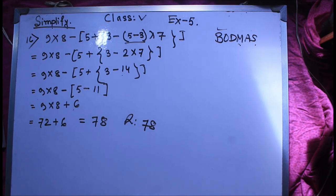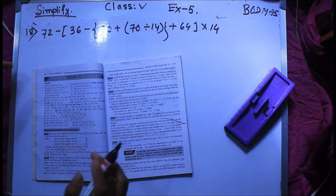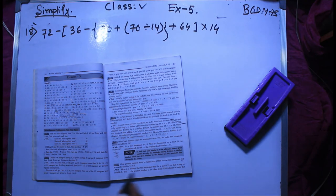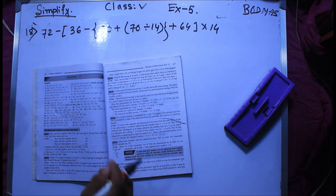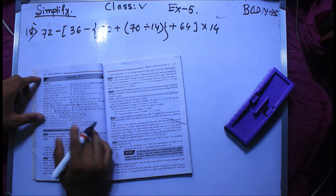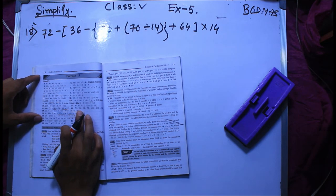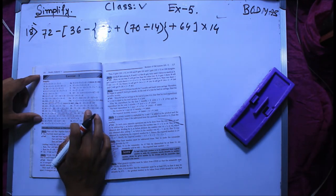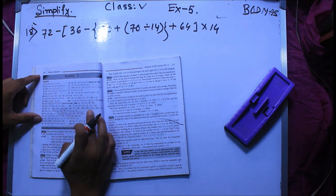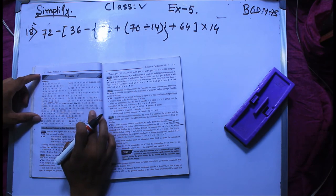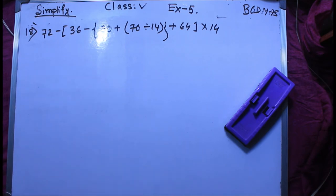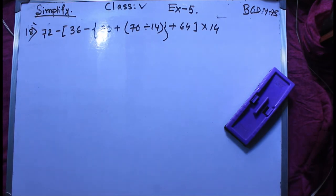So we have 18 number. We have 72 minus 36 minus 90 plus 70 divided by 40. So it is okay.